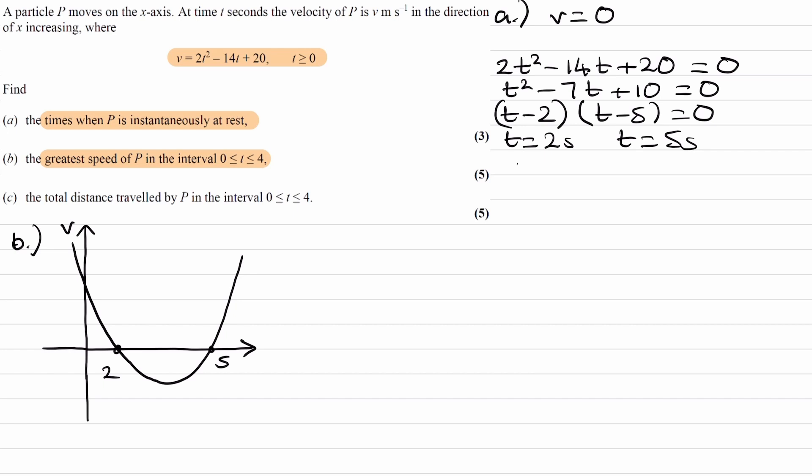We're trying to work out the greatest speed in the interval of 0 to 4 seconds. So using the symmetry of this shape, the midpoint, the lowest point, which is halfway between 2 and 5, if I find the average, 2 plus 5 divided by 2, I get 3.5, which is the x-coordinate of that point. So 4 would be somewhere over here. We're looking at this portion of the graph here, between 0 and 4 seconds. So we have two possibilities. We have this point here, we have this point here. Remember that speed is the magnitude of velocity. So we're looking for either the greatest positive or the greatest negative value. I'll just call this A, call this B.